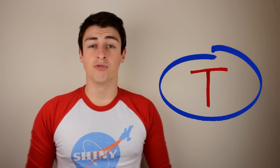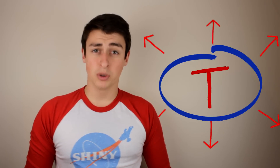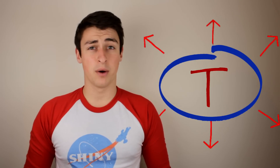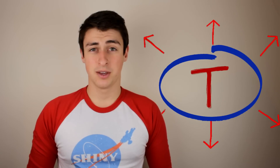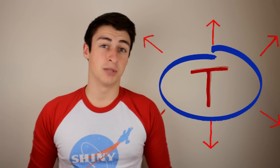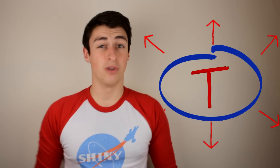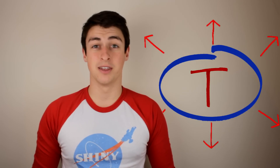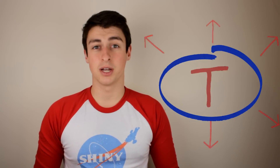And secondly, any object at temperature T radiates energy out at a rate proportional to the fourth power of its temperature. What that means is that a really hot object emits an awful lot more energy than a cooler object.